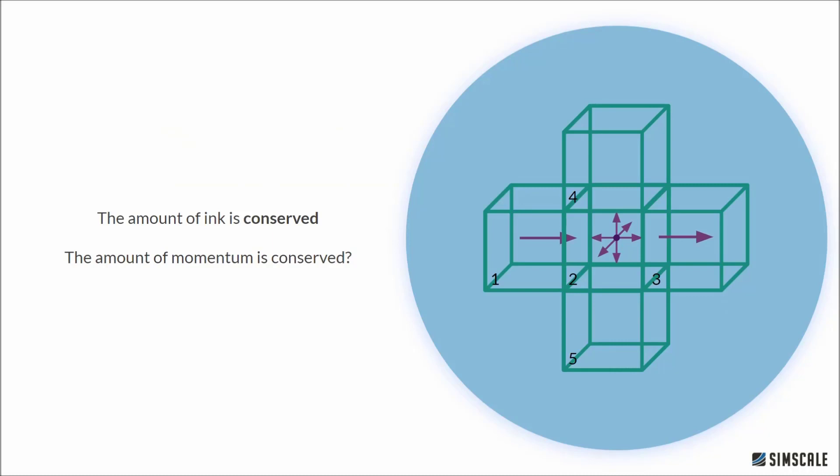So we had our cubes arranged such that we could conserve the amount of ink in the river by looking at how much ink is passing through the cube surfaces. Can we apply the same concept to things other than ink? Can the cubes also conserve things like momentum and mass? Yes, they can.